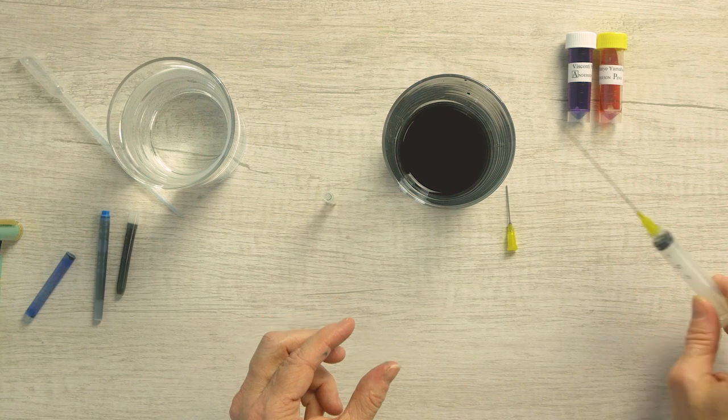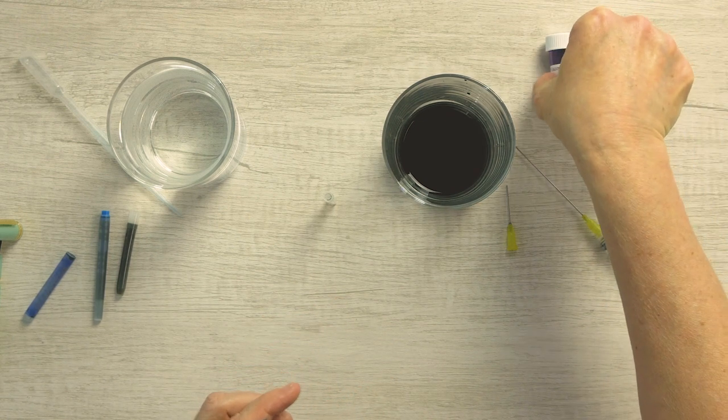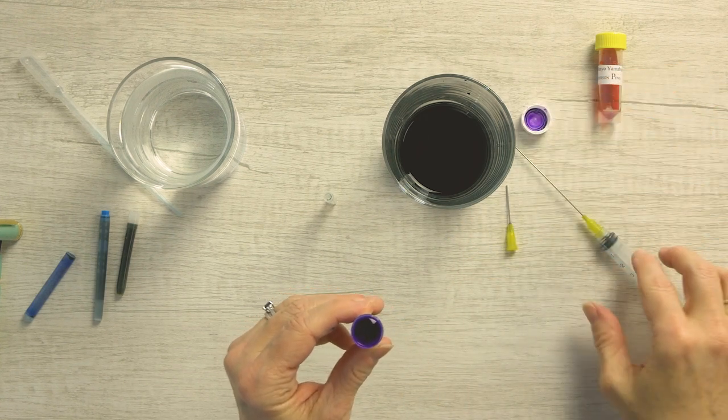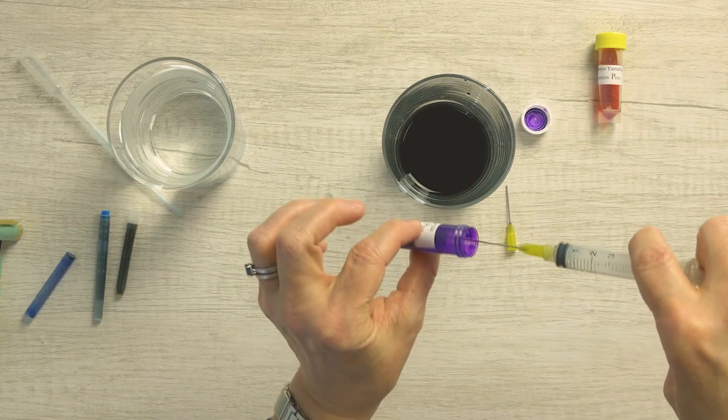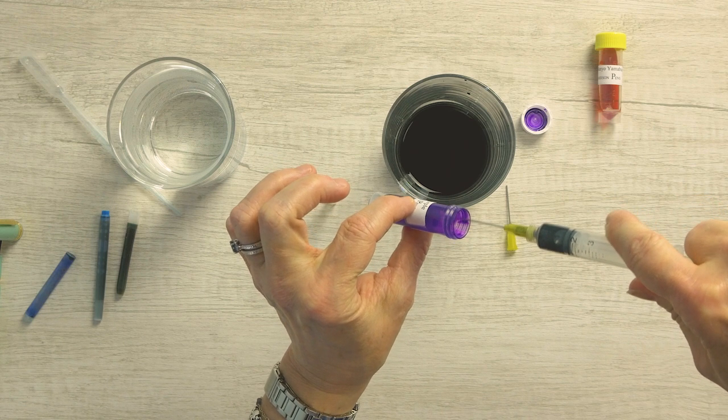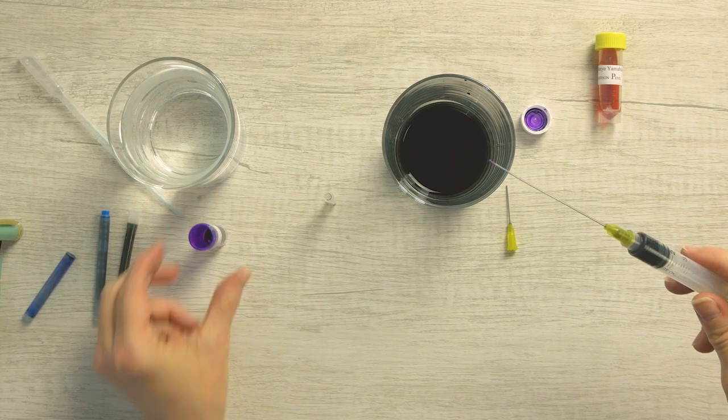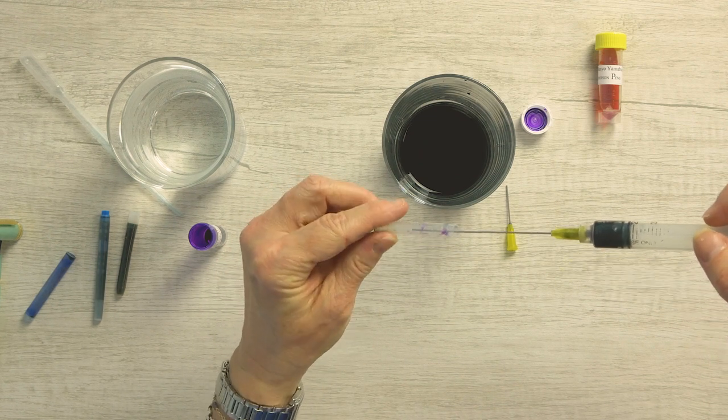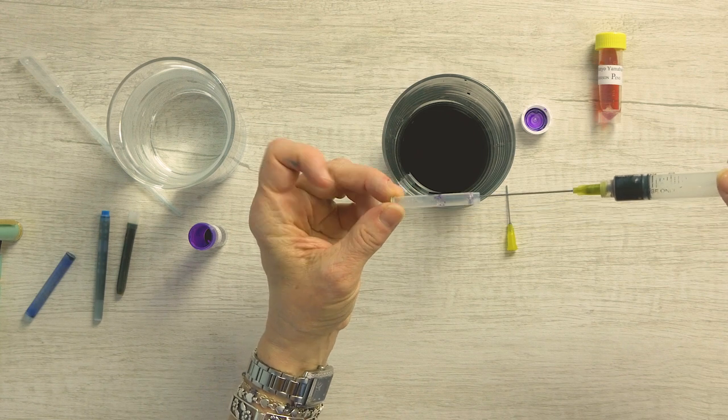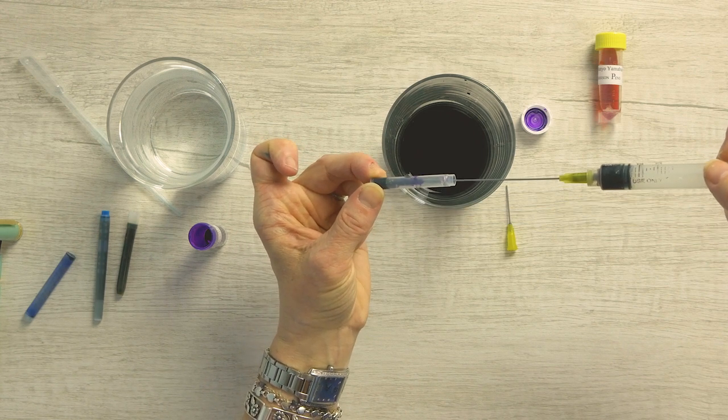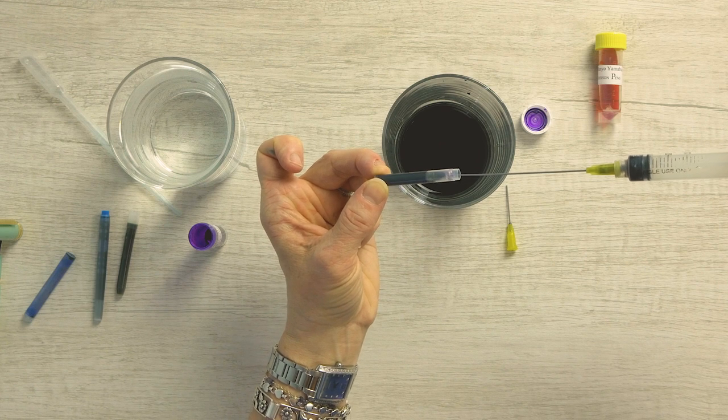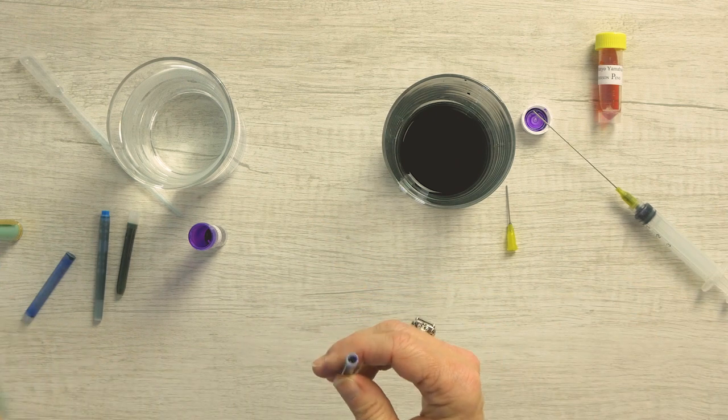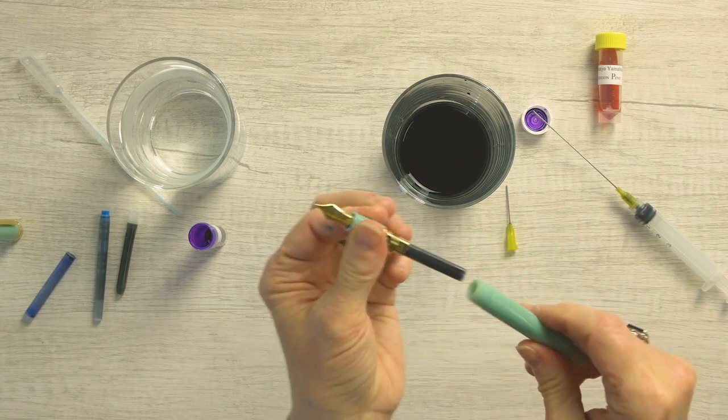Then to refill it, use the same syringe. I've got my Visconti purple here. Fill it up. Now the trick when you fill a cartridge is to go slowly. Because if you go too fast, you can either shoot the ink out or it'll bubble up and make a big mess. So you just go slow, refill it to the top, and then replace it in your pen and you're good to go.